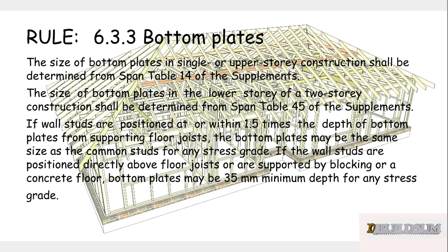Rule 6.3.3 states that bottom plates in single or upper storey construction shall be determined from span table 14 of the supplements. The size of the bottom plates in the lower storey of a two storey construction shall be determined from table 45. Similar to our top plates, if wall studs are positioned at or within one and a half times the depth of the bottom plate from the supporting floor joists, the bottom plates may be the same size as common studs for any stress grade. If the walls are positioned directly above floor joists, or are supported by blocking, or on a concrete floor, bottom plates may be a minimum of 35 millimetres deep for any stress grade.